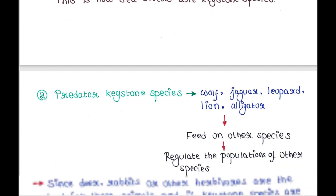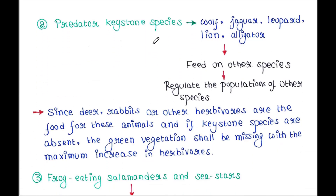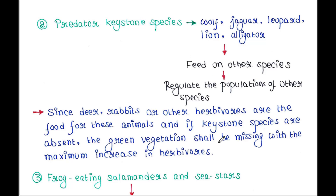The next example of predator keystone species includes wolf, jaguar, leopard, lion, and alligator. They feed on and regulate the populations of other species, since deer, rabbits, and other herbivores are their food. If these keystone species are absent, the green vegetation would be lost due to a maximum increase in herbivore populations.